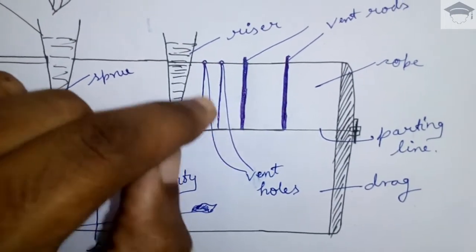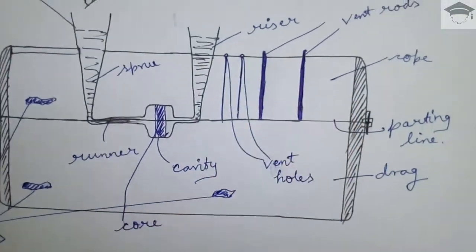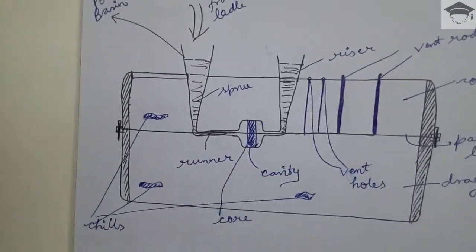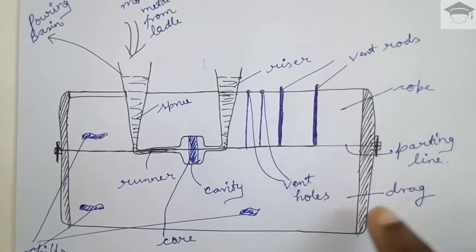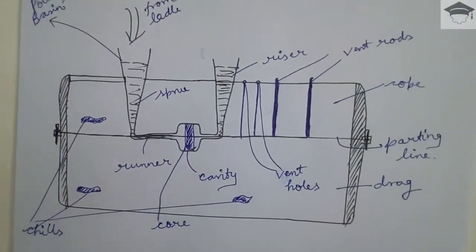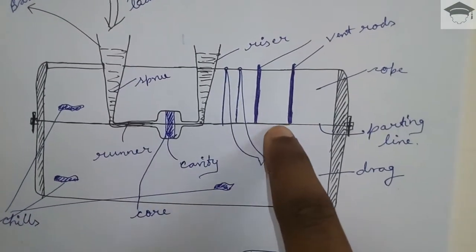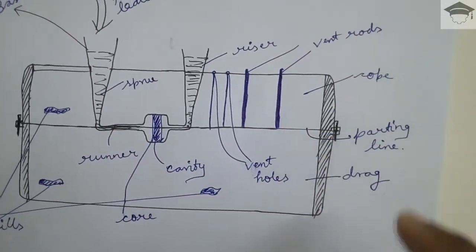Now mainly sand is used for making the cope and drag. Now the upper portion is known as cope, lower portion is known as drag. Just it is a name terminology. And the area where these two cope and drag meet is known as parting line.